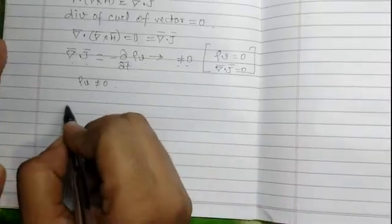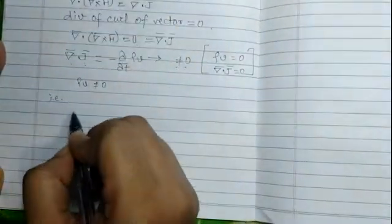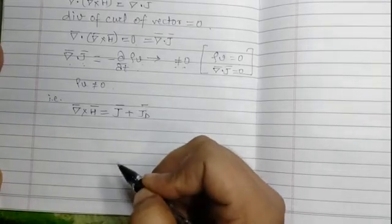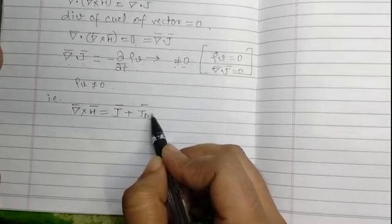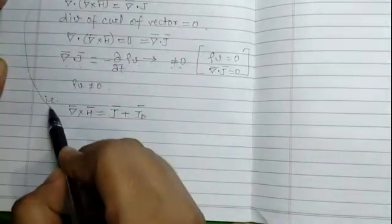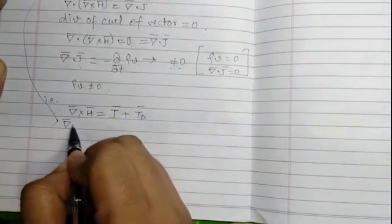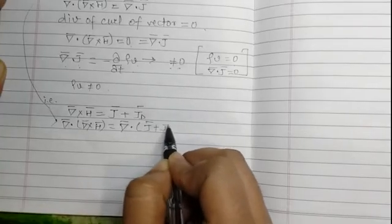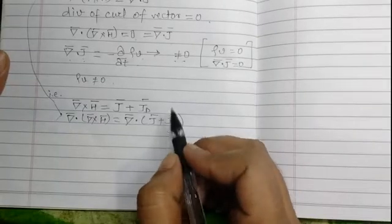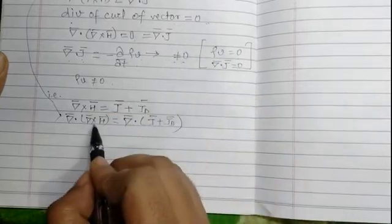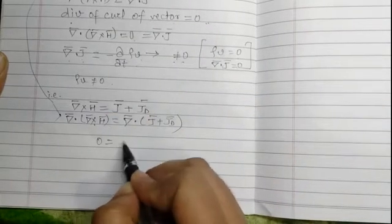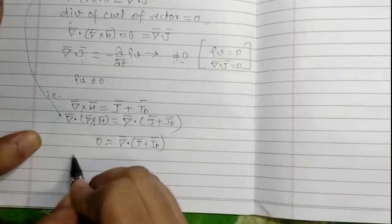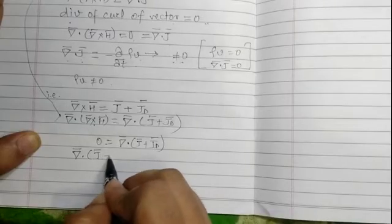Therefore, we introduce a new term to modify this equation. The modified equation becomes: del cross H equals J plus J_d, where J_d is the new term being introduced, known as the displacement current density. Taking the divergence again on both sides, we have divergence of (del cross H) equals del-dot (J plus J_d). Since divergence of curl of a vector equals zero, the left-hand side is zero.